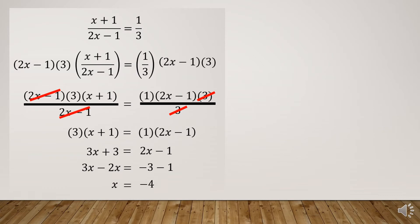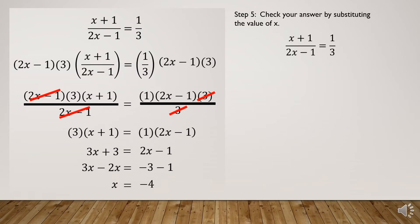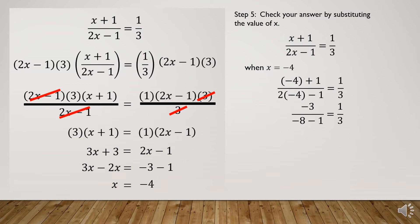Since we arrived at x = -4, we check by substituting into the original equation. We get (-4 + 1) / (2(-4) - 1) = 1/3, which simplifies to -3 / (-8 - 1) = 1/3, then -3 / -9 = 1/3, and simplifying gives 1/3 = 1/3.